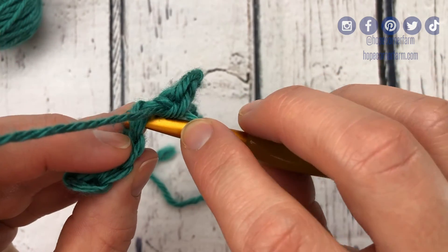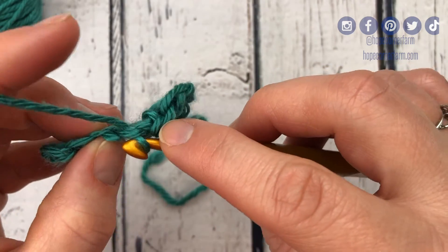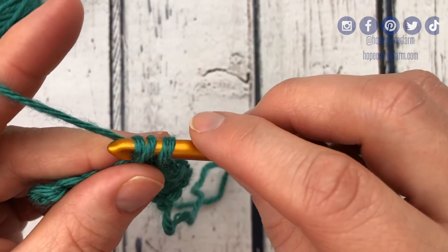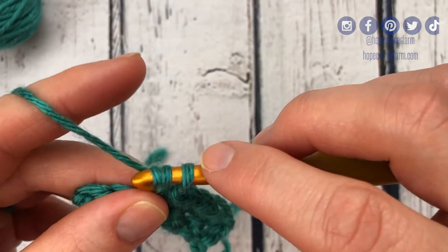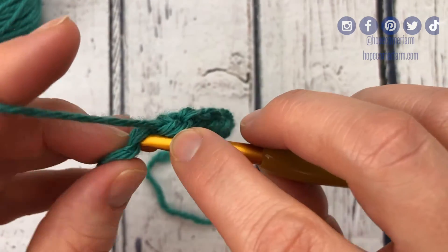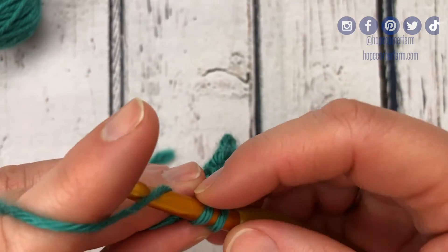We're gonna go right in here. Yarn over, pull through, yarn over, pull through. I'm gonna go a little faster here to continue across this chain so I can show you the last stitch on this row because it can sometimes be a little tricky.